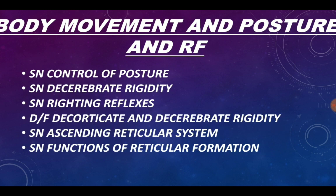Moving on to the chapter on body movement, posture, and reticular formation — this chapter is not very important from CNS, however one or two questions can be asked. Short note on control of posture is not important. Short note on decerebrate rigidity and righting reflexes are not generally asked. Differences between decorticate and decerebrate rigidity are also not important. Short note on ascending reticular system and functions of the reticular formation are important.